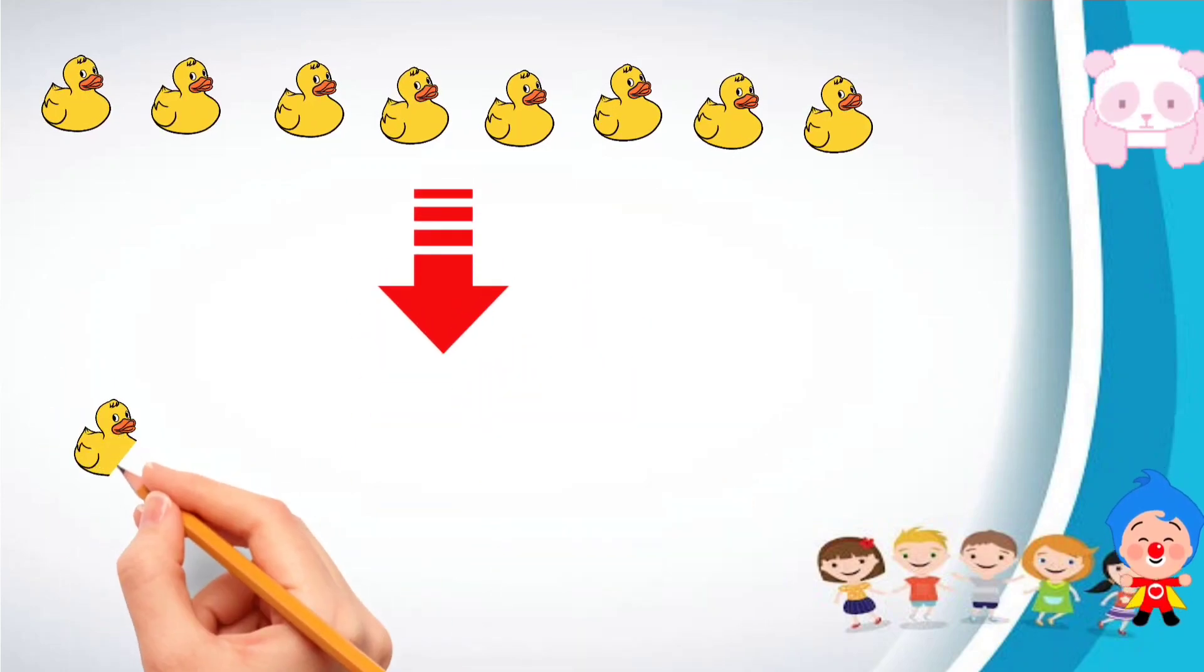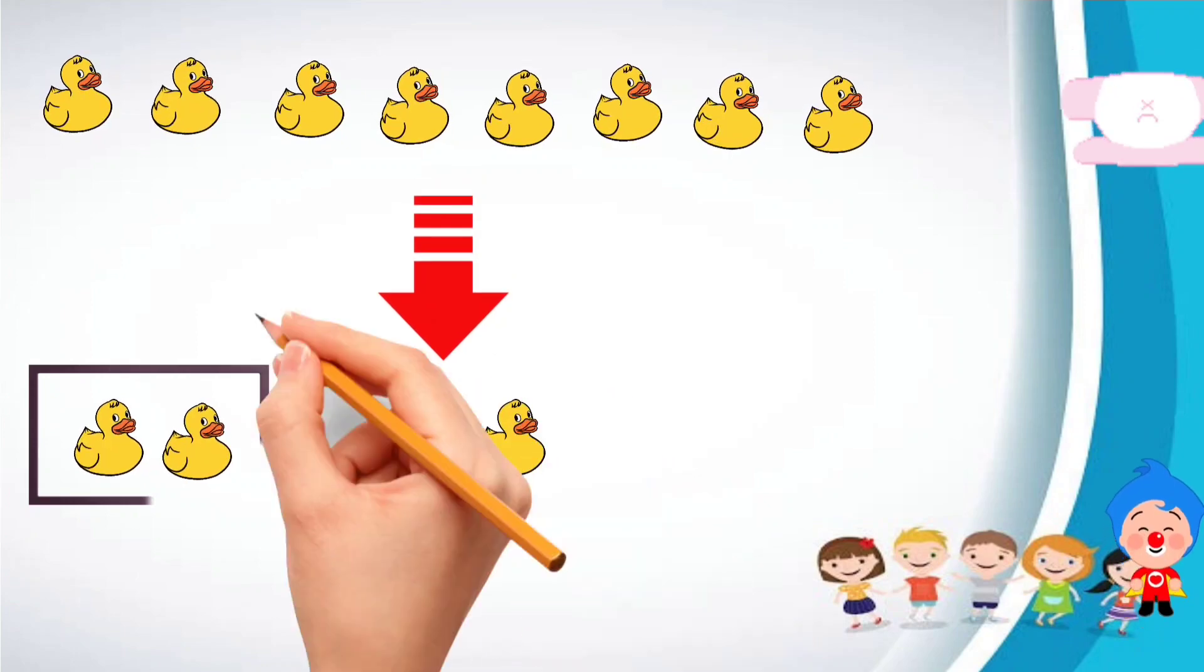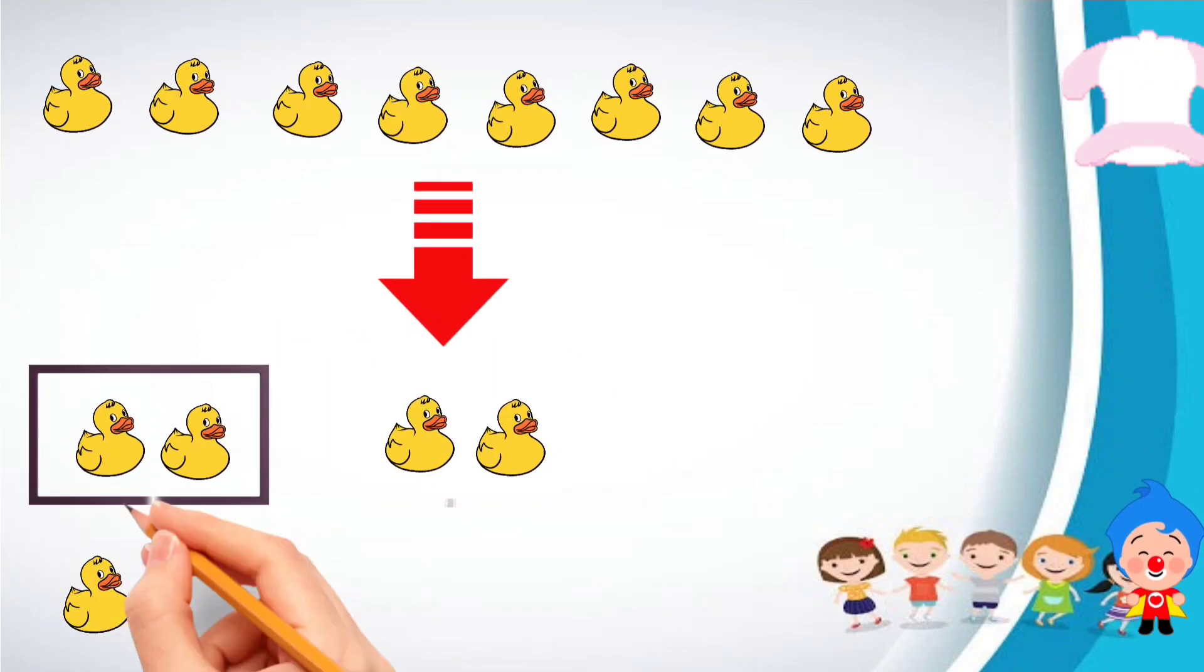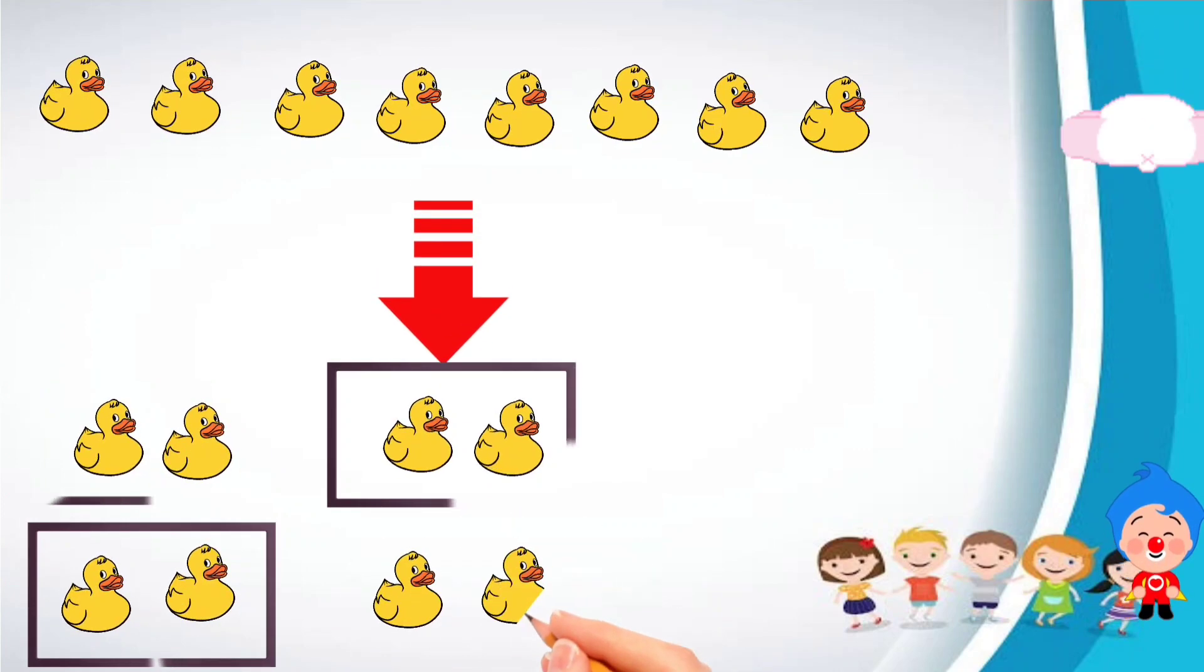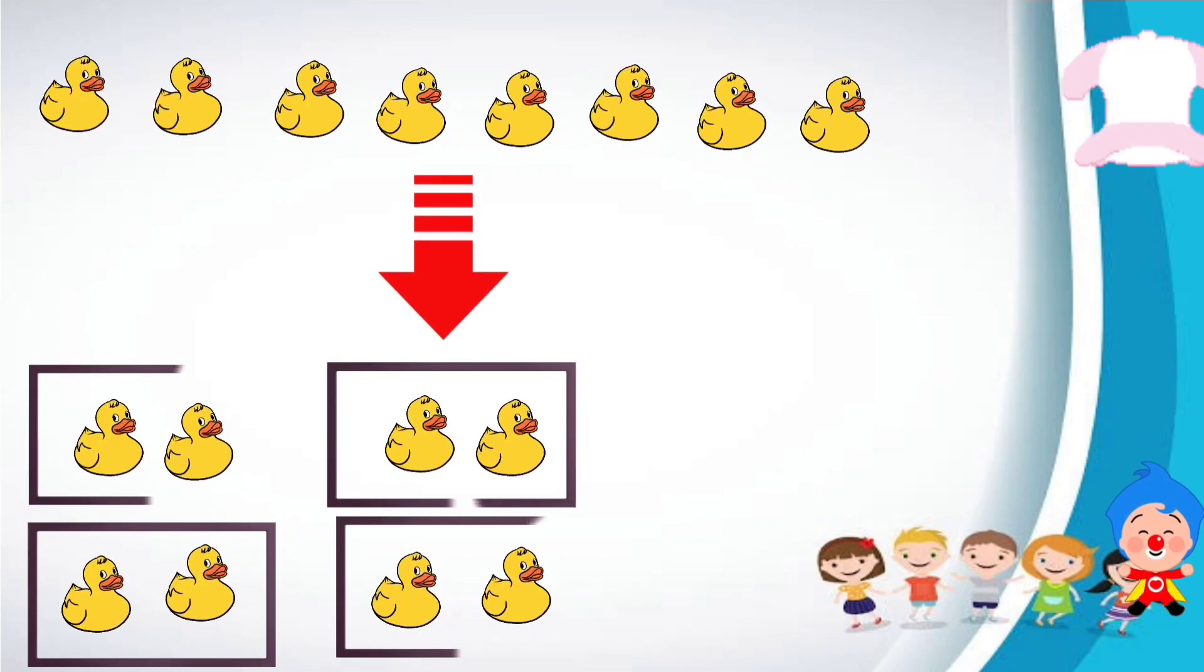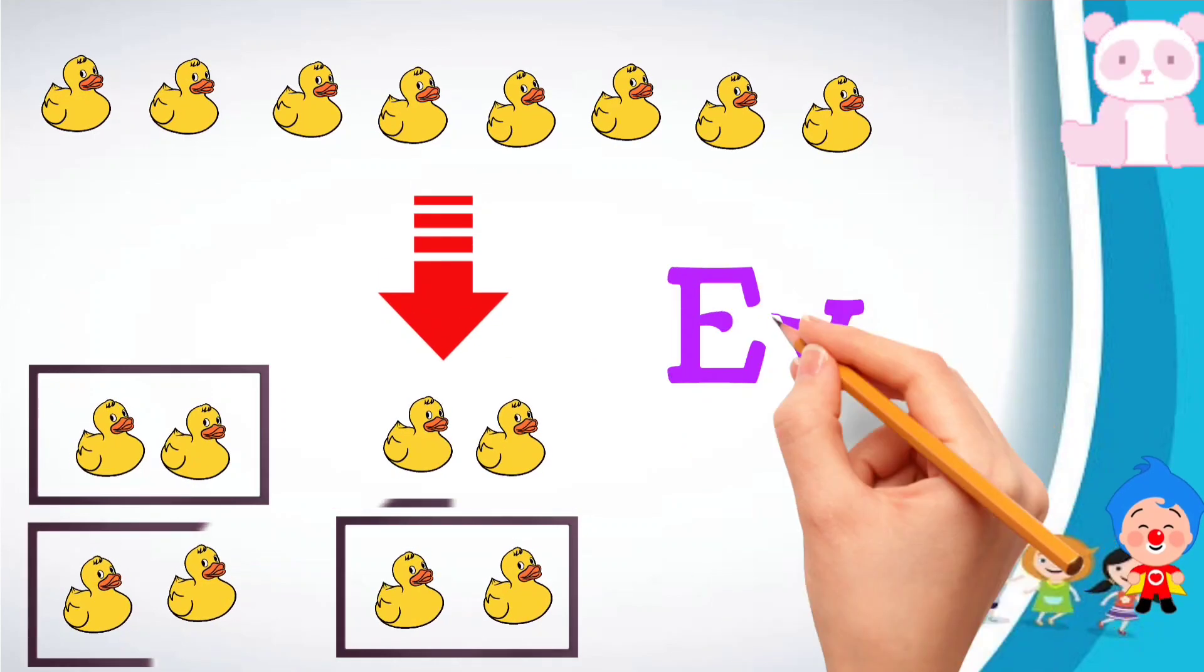This is first pair. Then comes second pair. Then third pair. Then fourth pair. So no duck is left out. So the number is even.